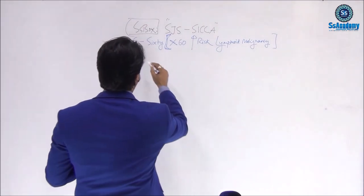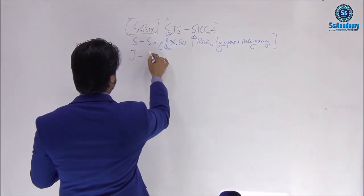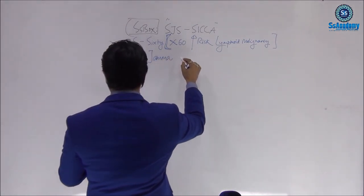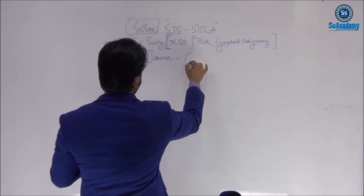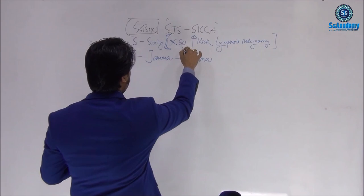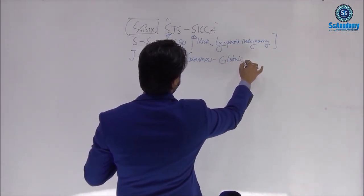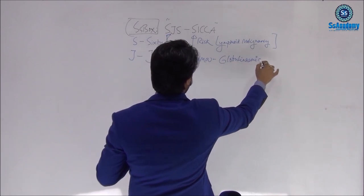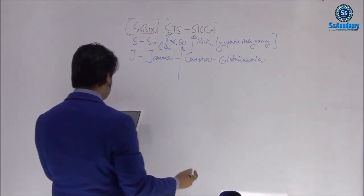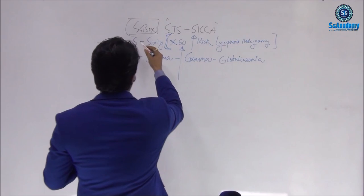Z stands for 'Zama,' which means gamma — representing hypergammaglobulinemia. This is another very important point of Sjogren's syndrome.